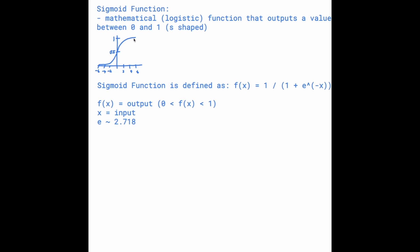So as x becomes a very large number, the output is going to approach 1. And if you think in the opposite way...